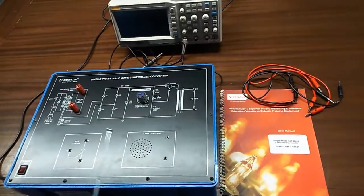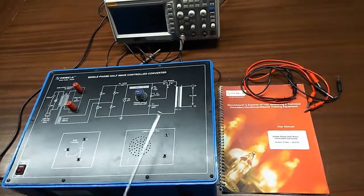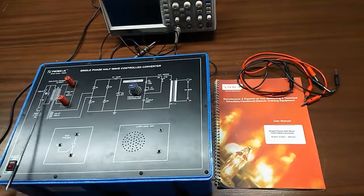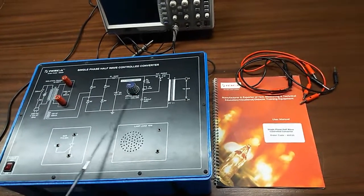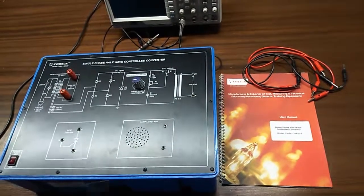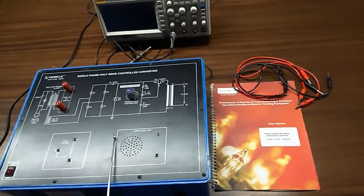This is the trainer kit. This is the mimic diagram given on the trainer kit. This is the isolation transformer, 50 watt. This is the firing angle controller. This is the UJT firing circuit. This is the SCR and this is the lamp load.